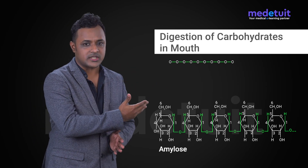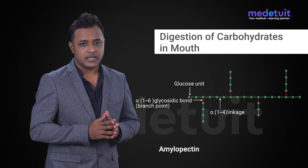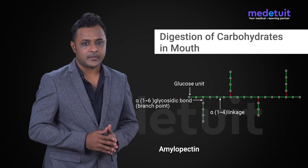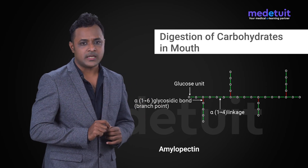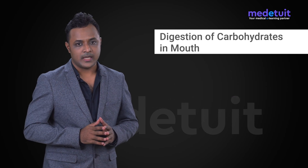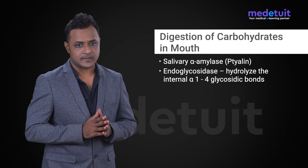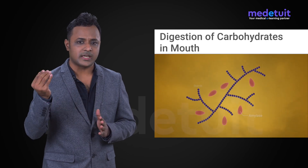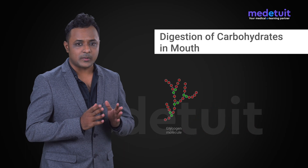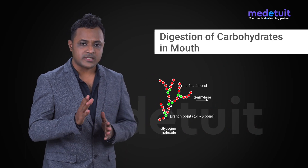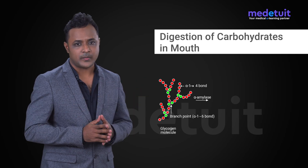Amylose is a linear structure, a polymer of glucose with alpha 1 to 4 glycosidic bonds. Amylopectin is a branched structure; in its linear parts it has alpha 1 to 4 glycosidic bonds, and at the branching points it has alpha 1 to 6 glycosidic bonds. Salivary alpha-amylase hydrolyzes only the alpha 1 to 4 glycosidic bonds in amylose and amylopectin, breaking these polysaccharides down into smaller pieces.